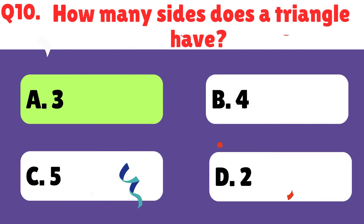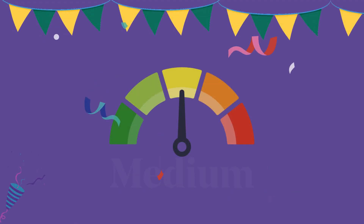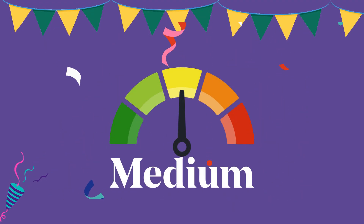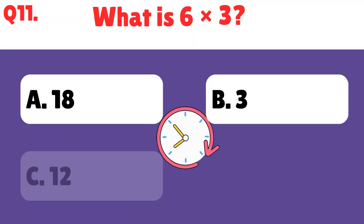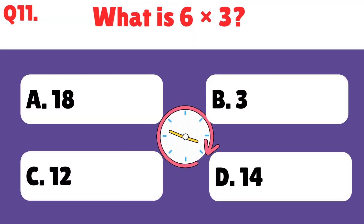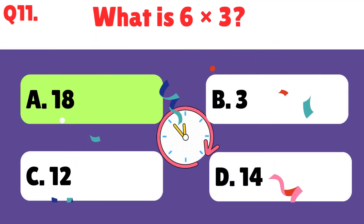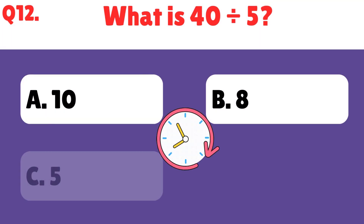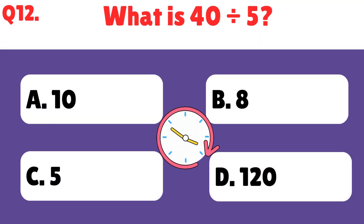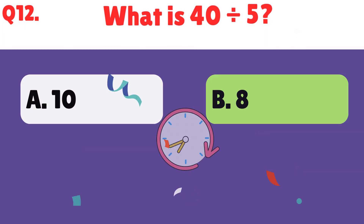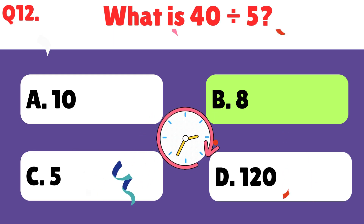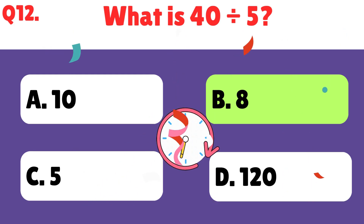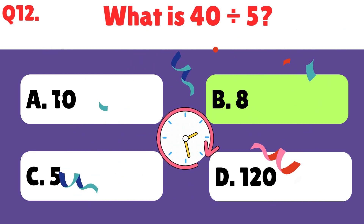Let's move to the medium level. What number is 6 times 3? 6 times 3 is 18. What is 40 divided by 5? 40 divided by 5 is 8.